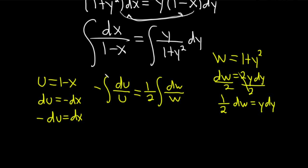Integrating both of these, we're just going to get logs, so it's pretty simple. This is negative ln absolute value of u equals 1 half ln absolute value of w plus our constant, which I'll call c.